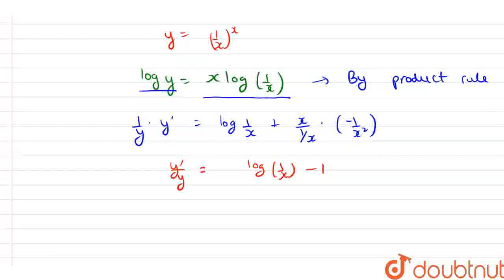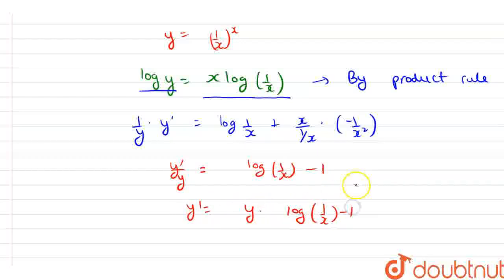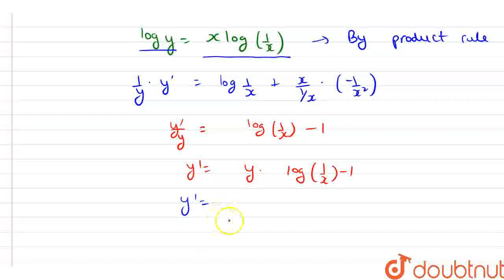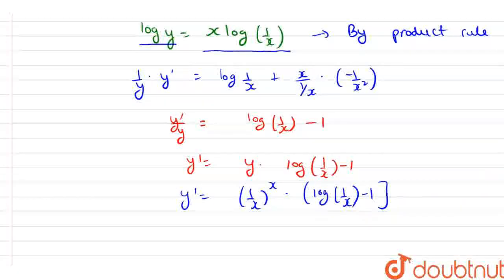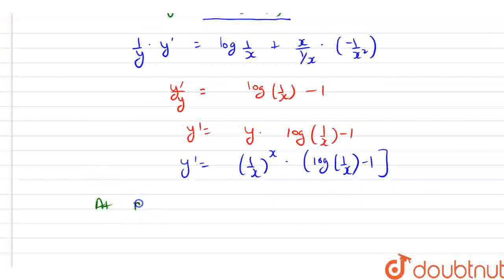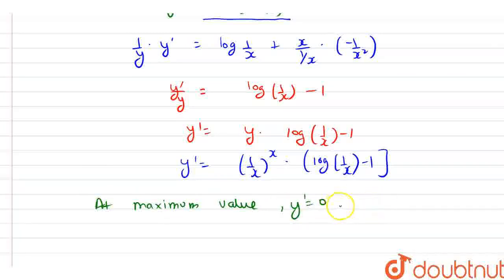So, here we have log(1/x) − 1. From here, y' is equal to y · (log(1/x) − 1). So, putting the value of y, we have y' = (1/x)^x · (log(1/x) − 1). Now, at the maximum value, y' = 0, and y'' must be less than 0.